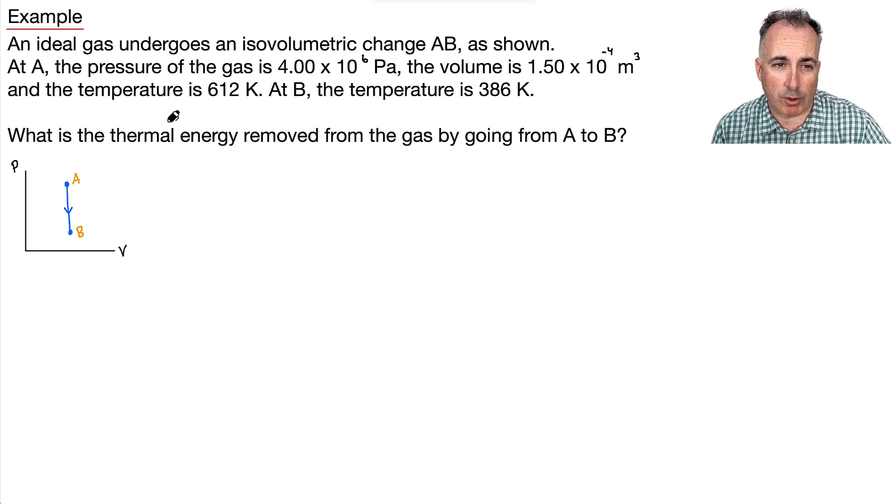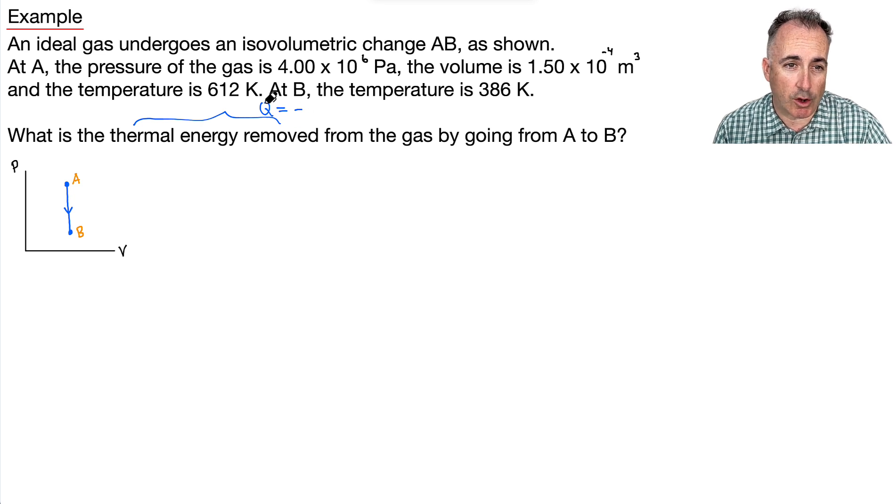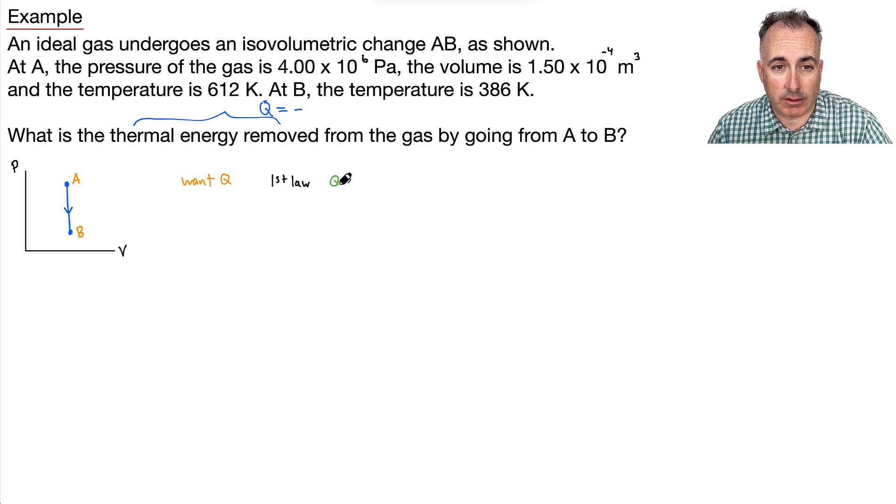So what do we mean by this? What is thermal energy removed? This implies we're looking for a Q value, and we expect it to be negative because it's removed. So we need to find a Q value, the thermal energy, and it's going to be probably negative. I thought in order to solve this, it might help just to start with a first step here. We want to find Q. So how can we find Q? Well, let's just use the first law of thermodynamics. That one just goes Q equals delta U plus W.